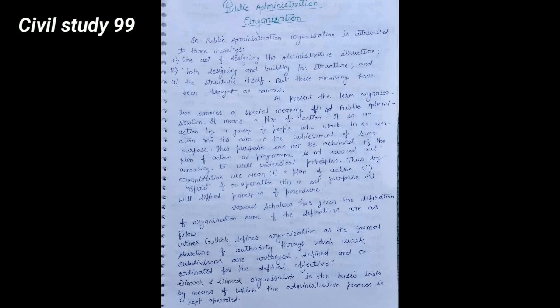Luther Gulick defines organization as the formal structures of authority through which work subdivisions are arranged, defined, and coordinated for the defined objective.